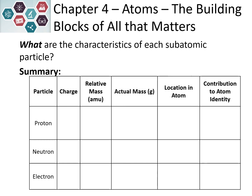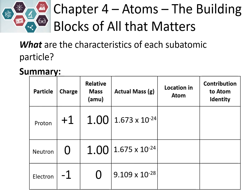Fill in your chart with the characteristics of each subatomic particle. The charge for a proton is plus one, neutrons are zero, electrons are negative one. The relative mass for a proton is one atomic mass unit, neutrons are one, electrons are essentially zero. In actual grams, protons and neutrons are about the same, while electrons are significantly less. Protons and neutrons are found in the nucleus; electrons are in the orbitals in the empty space around it.